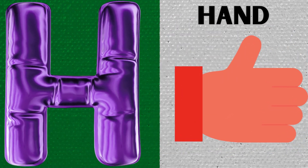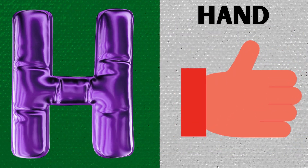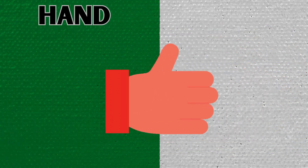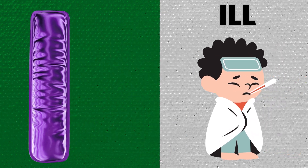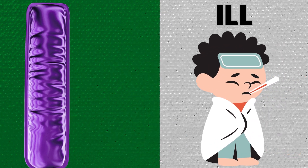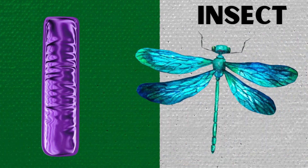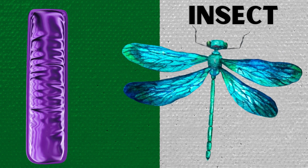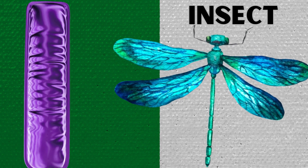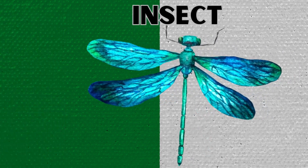H is for Hand. H, H, Hand. I is for Ill. I, I, Ill. I is for Insect. I, I, Insect.